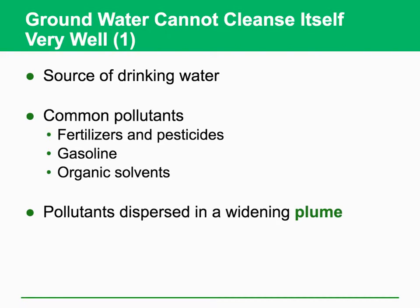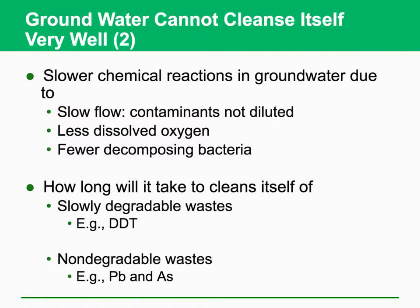The common pollutants for groundwater are fertilizers and pesticides, gasoline from spills, and organic solvents. Once these pollutants get into groundwater aquifers, they disperse in a widening plume so that the effect is tremendous. The natural cleanup process is very slow in groundwater due to slow flow, less dissolved oxygen, and fewer decomposing bacteria, so it takes a very long time to recover water quality by this natural process.